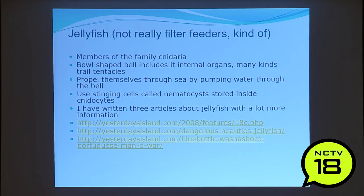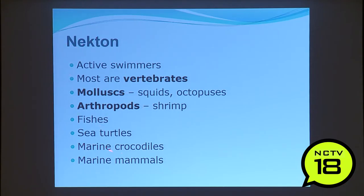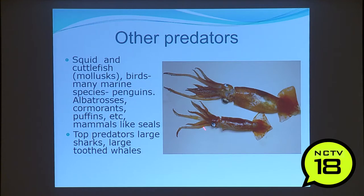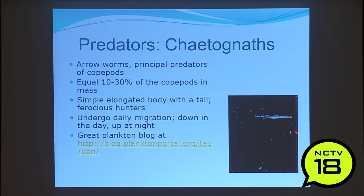Nekton are active swimmers. Most are vertebrates; some are mollusks — squid and octopuses — and arthropods. We've got fish, sea turtles, marine crocodiles, and marine mammals. Squid and cuttlefish, which are mollusks, are marine predators. Top predators are large sharks and large toothed whales. A chaetognath or arrow worm is about the size of a copepod with a long tail and vertically migrates. Giant squid — cephalopods in the order Teuthida — were long thought to possibly not exist, but sperm whales were seen with giant squid tentacle marks on them.